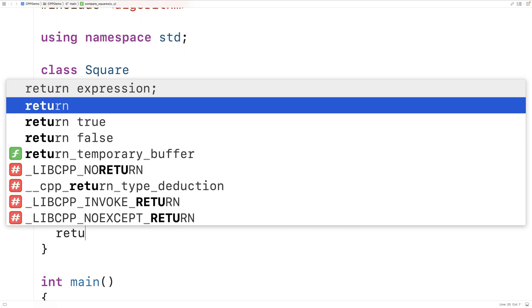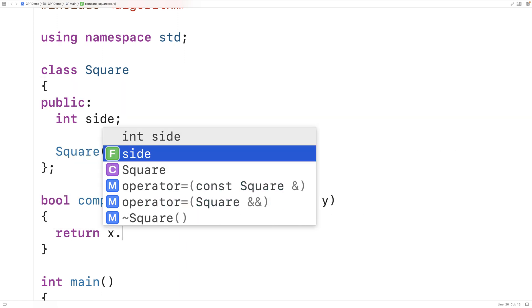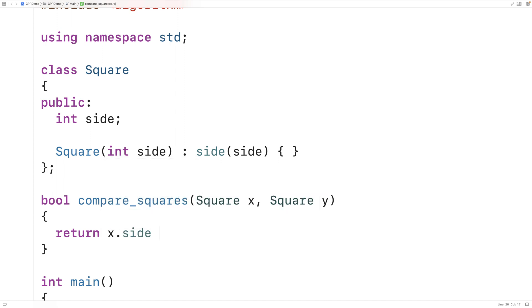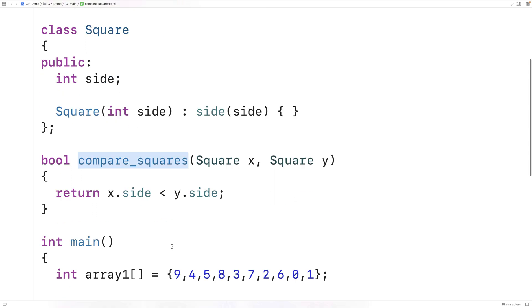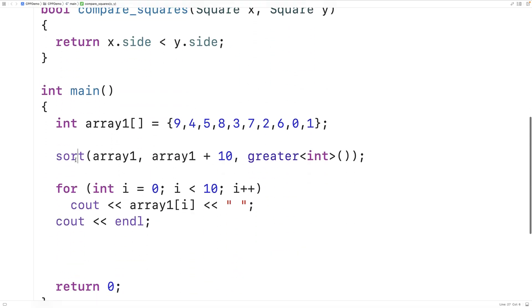And that's going to define how we compare our square objects. So here I could say return x dot side less than y dot side. So the way our function is going to work is that if x's side is less than y's side we're going to return true. Otherwise we're going to return false. And we could use this function to define how to compare our square objects for the sake of this sort function.